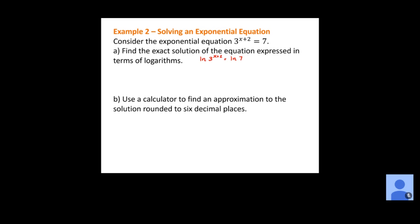Now we can use our properties of logarithms. One of our properties tells us that if we have an exponent inside a logarithm, we can move it out to the front as a coefficient. So that x plus 2 gets moved to the front: we have x plus 2 times the natural log of 3 equals the natural log of 7. At that point, we distribute the natural log of 3 to everything in parentheses, giving us x times the natural log of 3 plus 2 times the natural log of 3 equals the natural log of 7.